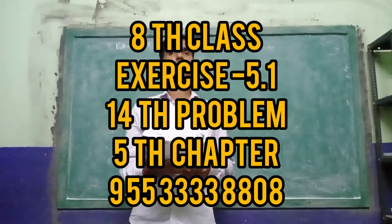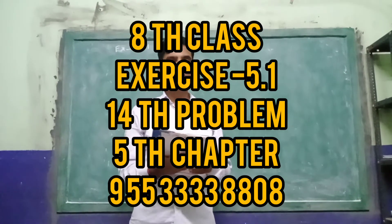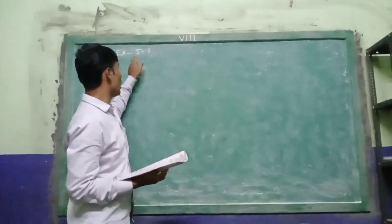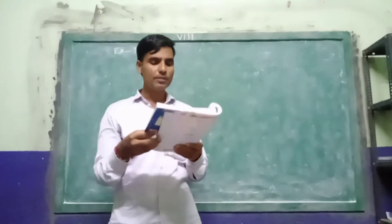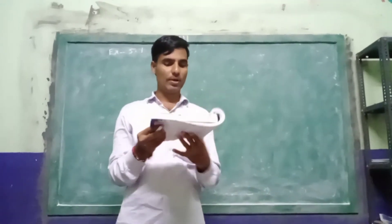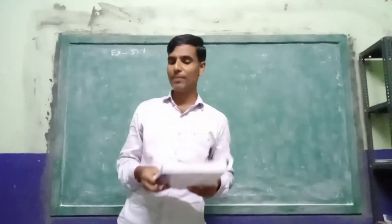We are discussing exercise 5.1, 8th class, 14th problem. Points P and Q are both on the line segment AB and on the same side of its midpoint. P divides AB in the ratio 2 is to 3 and Q divides AB in the ratio 3 is to 4. If PQ is equal to 2, then find the length of the line segment AB.